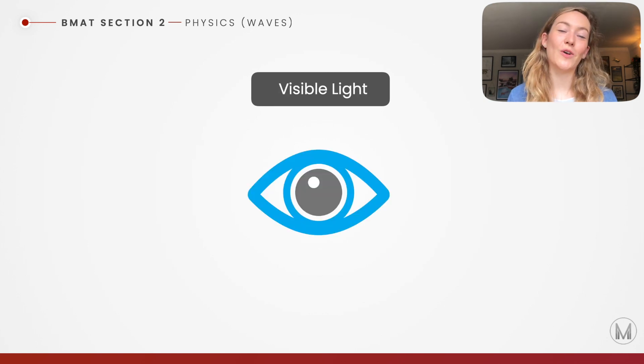Then we have the visible parts of our spectrum. We can use that in fibre optic wires that you might have heard of, for example. They're really useful because they've got a shorter wavelength. They can carry more information than, for example, radio waves.